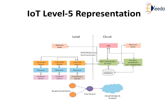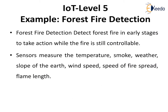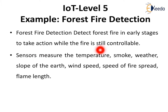The main difference compared to Level 4 is that Level 5 has multiple end nodes connected to a common coordinator node. Let's see the example of forest fire detection. The forest fire detection system detects forest fire in early stages to take action while the fire is still controllable.